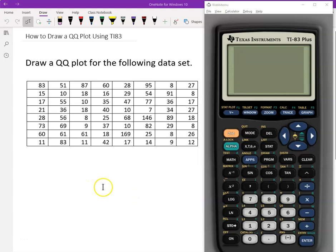Hello, this is Paul from Forsytec. In this video, I will show you how to draw a QQ plot using TI-83. QQ plot we also call normal quantile plot. Here is the data. The first step, we need to input data into the calculator.